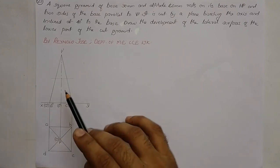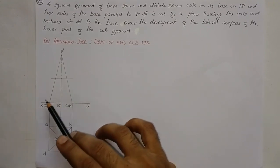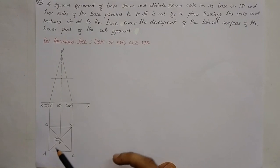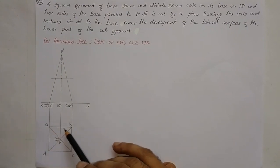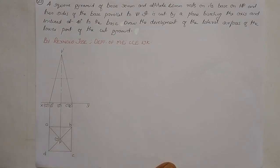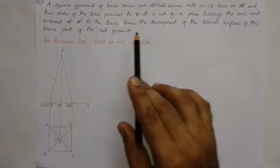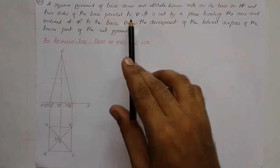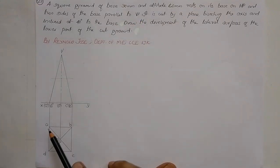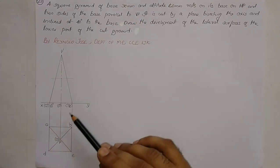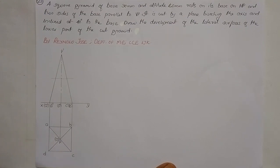The front view outline is a triangle and the top view outline is a square. This is drawn as per the requirement of the question — two sides of the base must be parallel to VP. So here sides AB and DC are parallel to the XY line, and parallel to the XY line in the top view means parallel to VP.